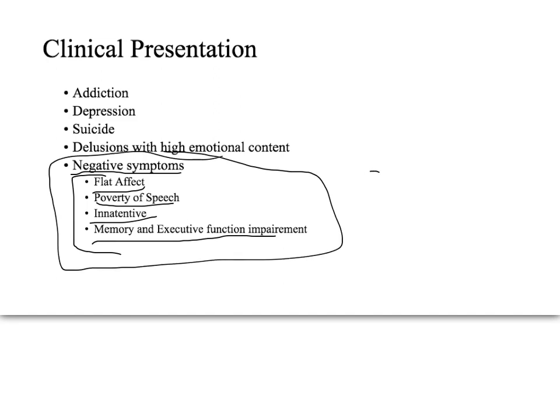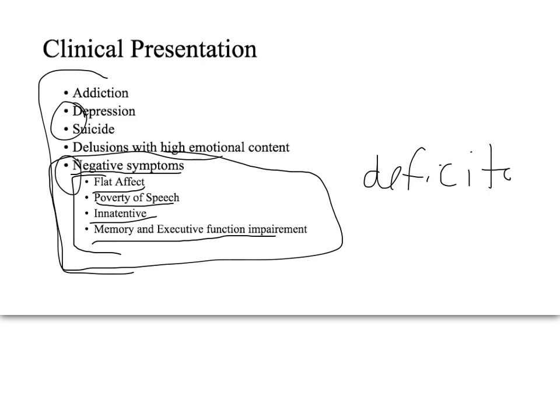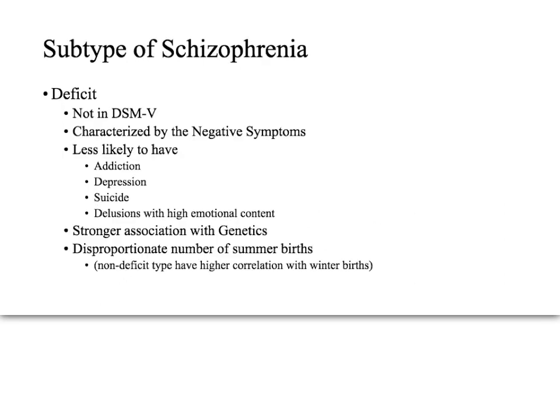If the patient has positive and negative symptoms — or a couple of positive and one or two negative — that would be typical schizophrenia. The deficit subtype is not listed in the DSM-5, though it is characterized by negative symptoms as I described. It has a stronger association with genetics, meaning if close family members have this subtype, your own risk is higher.